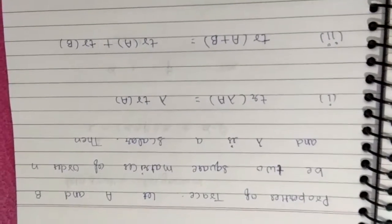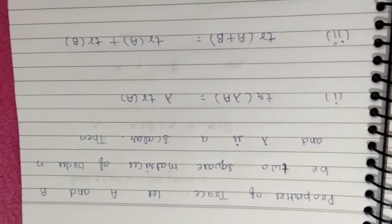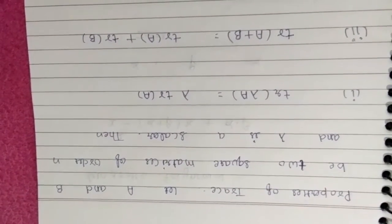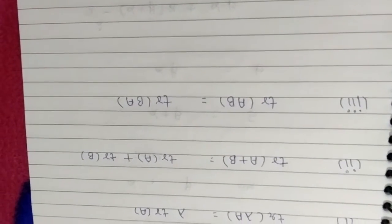Next property: trace of two matrices A plus B will be trace A plus trace B. And third property is trace AB will be equal to trace BA.